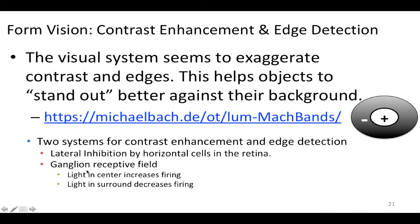The other system is called a ganglion receptive field. This is really similar to what we saw with opponent process theory for color, where red might excite a neuron and green might inhibit it — a very similar process, except that here it's not the type of light but where the light is. Light in the middle will excite the neuron, while light along the outer edge will inhibit it. If light is in the center, this neuron fires intensely; if light is around the outer edge, this neuron becomes inhibited.